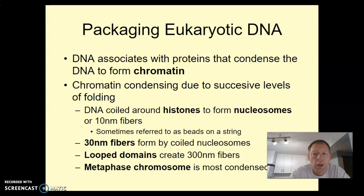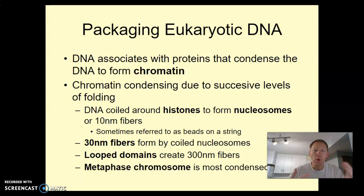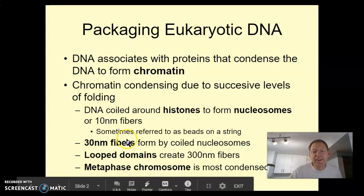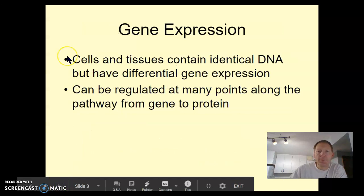Eukaryotic DNA is controlled a lot differently than bacterial DNA. The biggest issue is there's tons of it and you need to package it — it just would not fit if you let it hang out unwound. We have the ability to package our DNA, and there are lots of proteins involved. The most important protein is called histones, which DNA winds around. There are also nucleosomes, and there are all these different layers where you wind it and then wind it again.